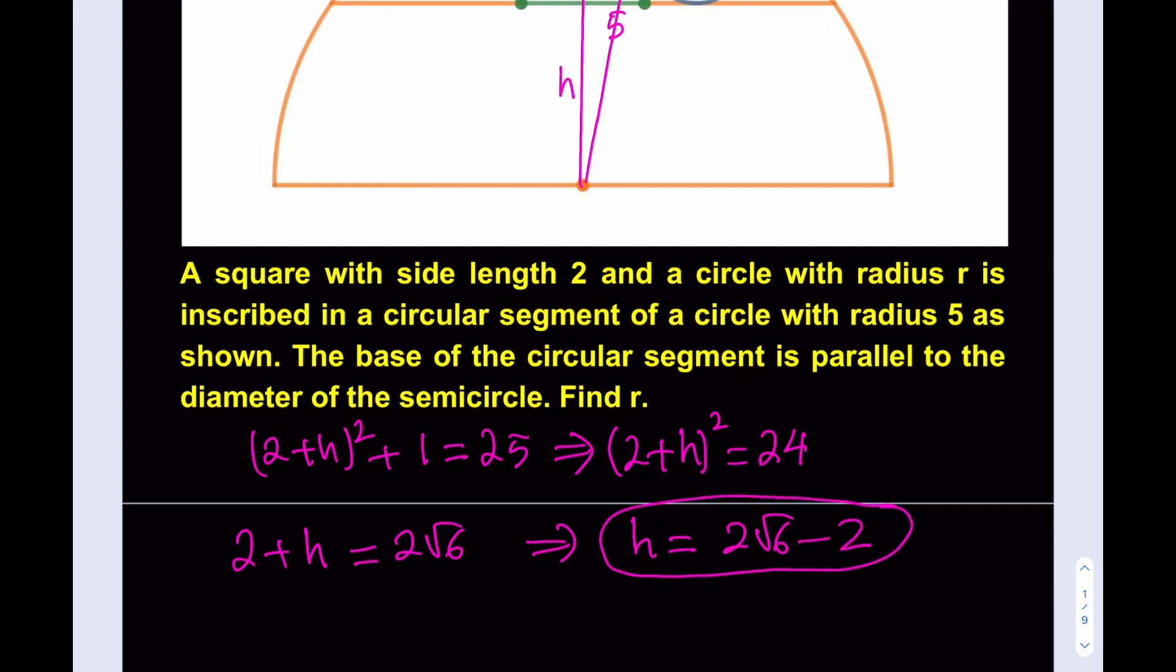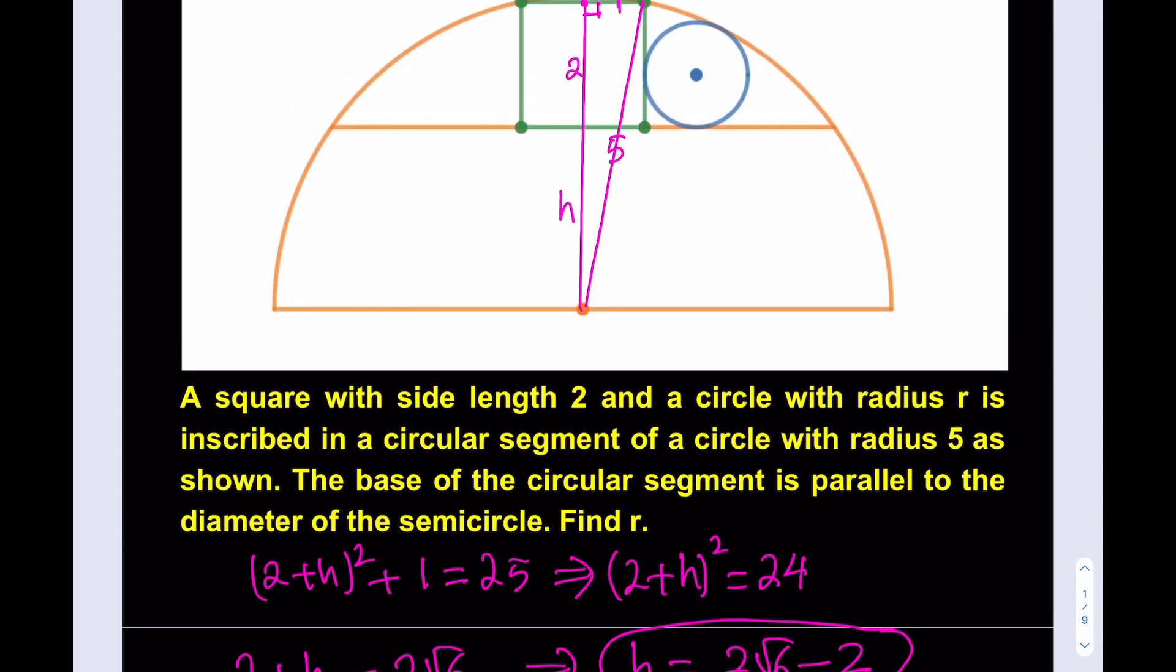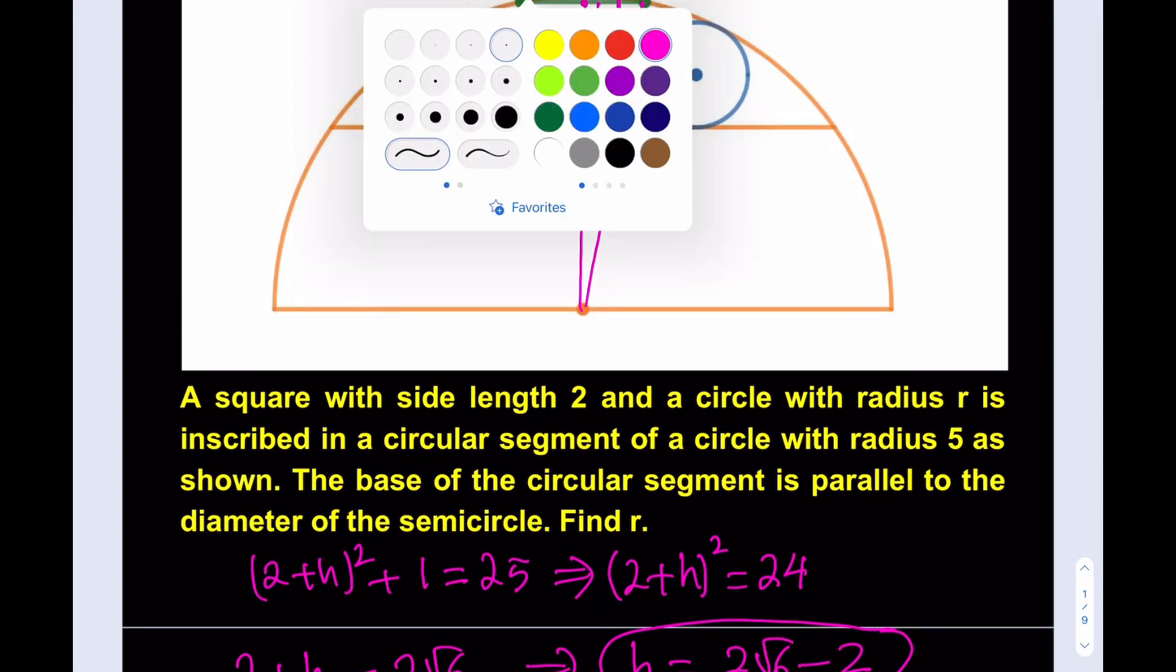So we know now the height of the triangle. If you add the 2, that's going to be the height. Beautiful. Now let's make more connections. Let's change the color here, maybe green. Okay, awesome.